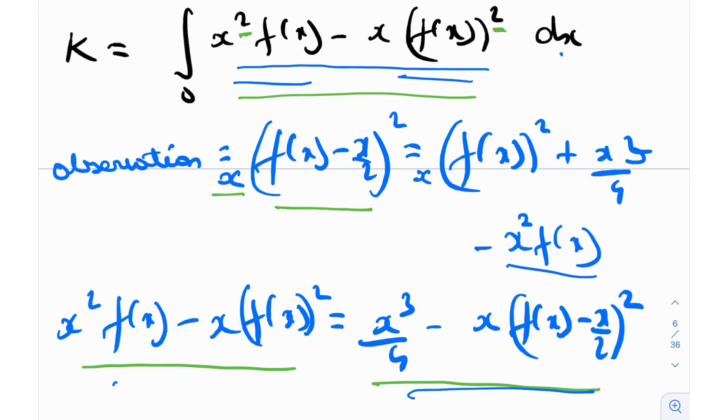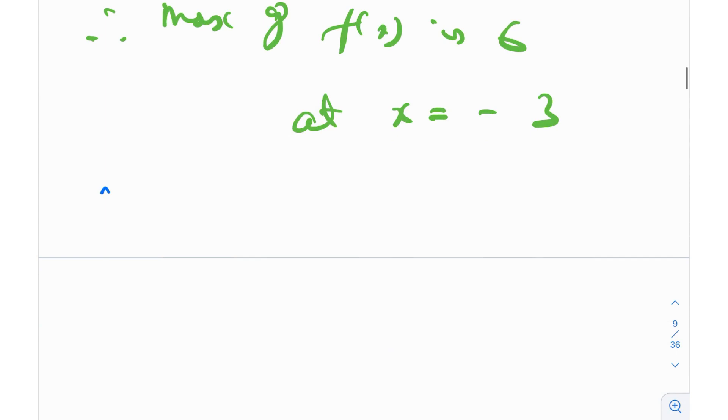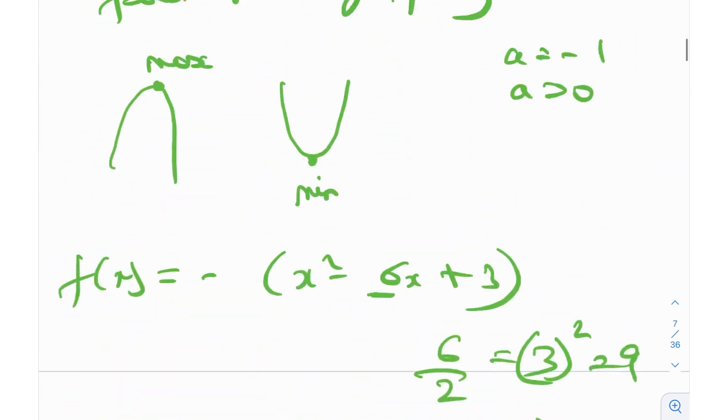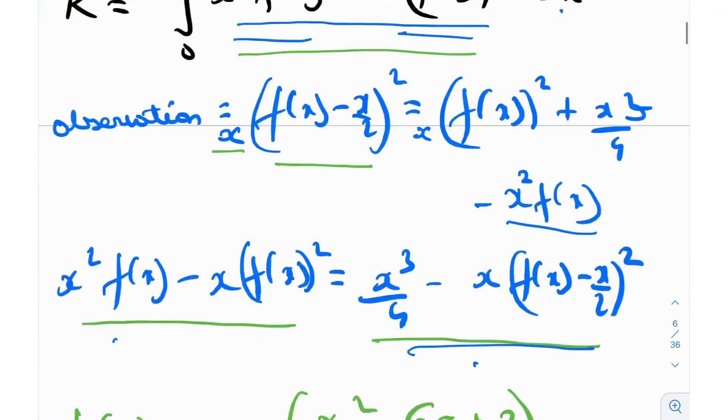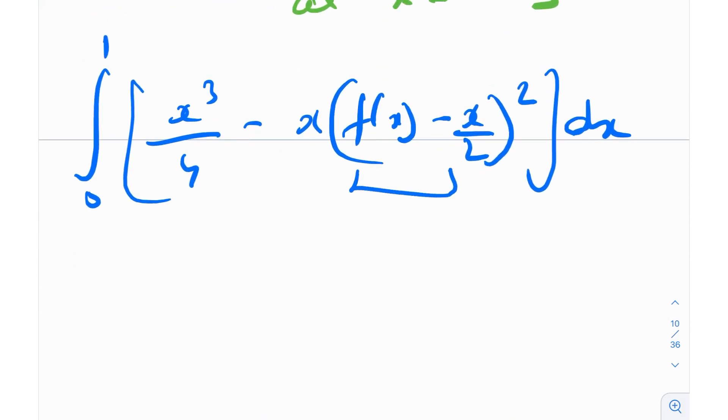If I just plug in the value of this into our original integral, we will get the integral of 0 to 1 times x³/4 - x[f(x) - x/2]² dx. Now, if you notice in the question, it is given that x is from 0 to 1. Essentially, x is always positive. x is always positive, and this is a squared term, so you're always subtracting a positive quantity.